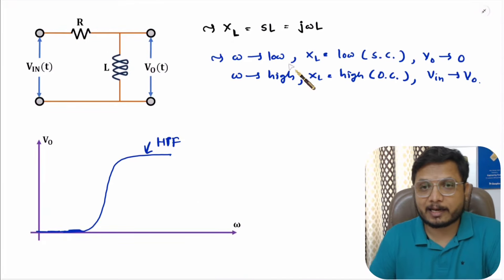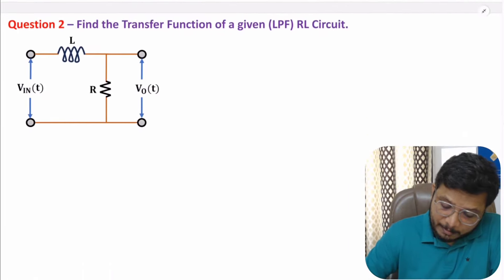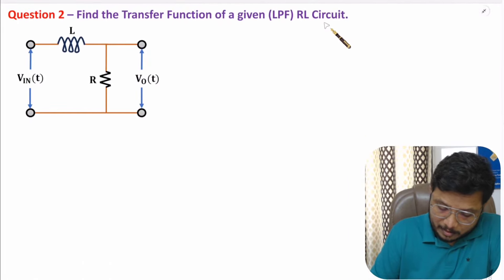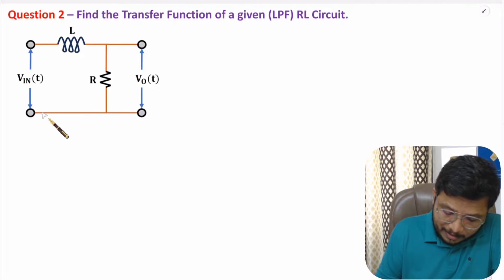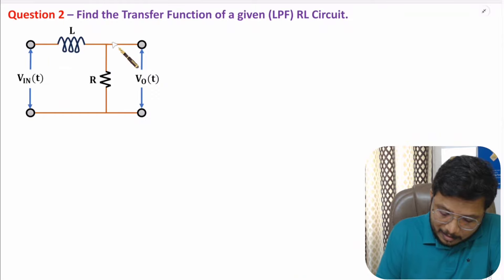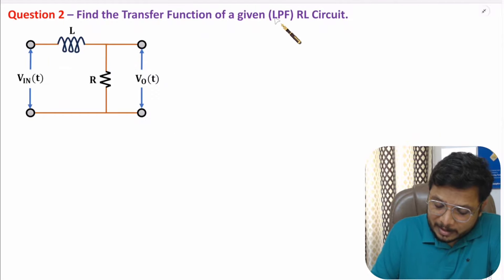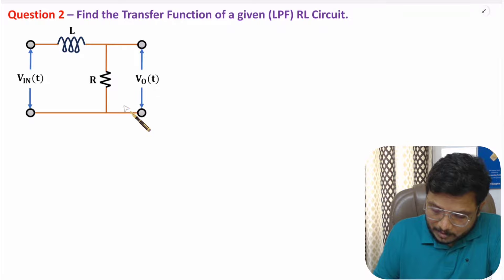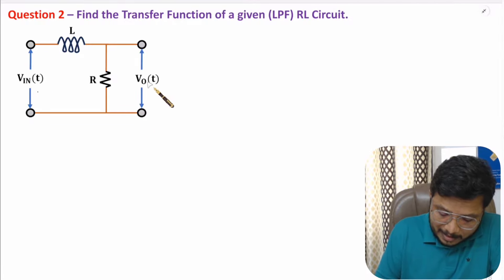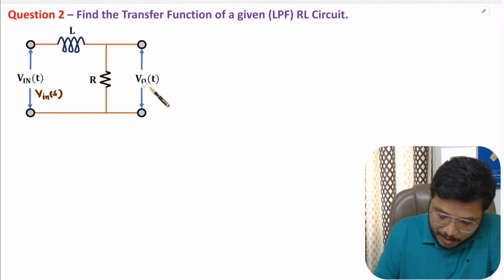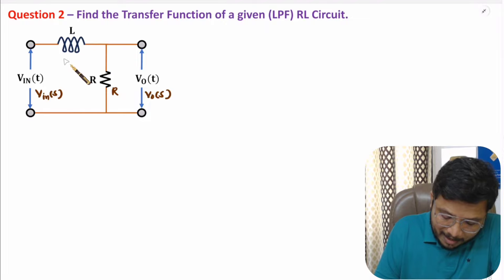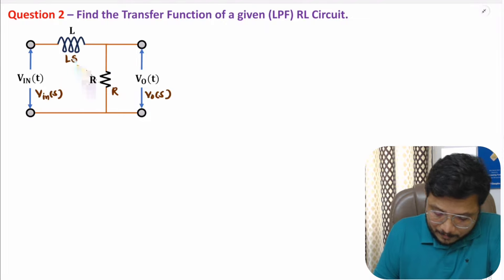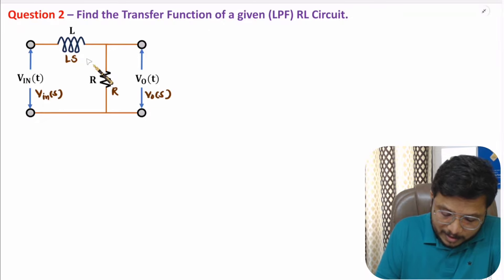Now let me explain the transfer function of the low pass filter RL circuit. In the low pass filter RL circuit, the input is connected in series with the inductor, and we take the output across the resistor. We replace all elements in the Laplace domain: Vin(t) becomes Vin(s), Vo(t) becomes Vo(s), resistance R stays as R, and inductor L has impedance Ls.